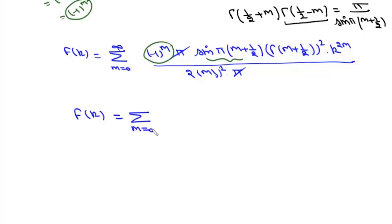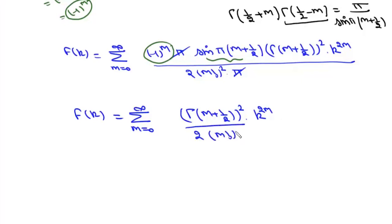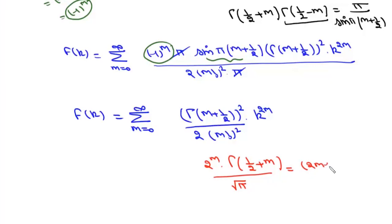With the simplification, F(k) becomes the summation where m varies from 0 to infinity of Gamma(m plus 1/2) squared times k^(2m) over 2 times factorial(m) squared. We also need the result: 2^m times Gamma(1/2 plus m) over sqrt(pi) equals the double factorial (2m minus 1)!!, where double factorial means the product of all odd numbers 1, 3, 5 up to (2m minus 1). So Gamma(1/2 plus m) equals sqrt(pi) over 2^m times (2m minus 1)!!.